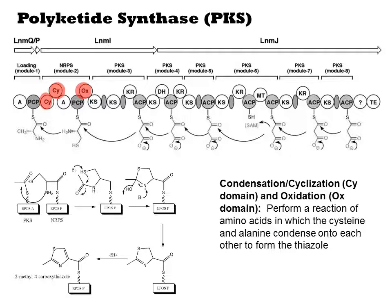We have already discussed the role of A and PCP domains. This NRPS module contains cyclization and oxidation domains. These are alternates to the C domain we saw in the more typical case. They perform the condensation step, but also the cyclization of the cysteine side chain with the backbone to form a ring, and subsequent oxidation of the heterocycle to a thiazole.